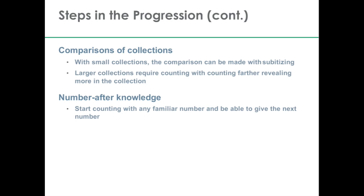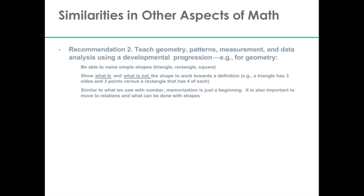As we're nearing the end of preschool and entering into school age — so now we're talking about 5 or 6 year olds — another step in this progression is that eventually children will be able to start counting with any number they know. They won't have to start with 1, but could start at 5 and know that the next number after 5 is 6. It's actually a development to be able to break up the count sequence and start at any point. That 'number after' knowledge is valuable for doing addition and is one of the later steps in the number sequence.